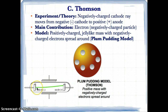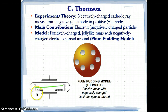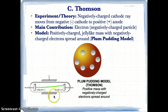The negatively charged cathode ray moved away from the negatively charged cathode because like charges repel, and towards the positively charged anode because opposite charges attract. So this negatively charged cathode ray went towards the positive anode, proving there was a negatively charged particle that could move toward something positive.